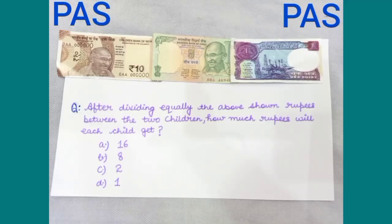Now, the question for pass, after dividing equally, the above shown rupees between the two children, how much rupees will each child get? Students, you can see, there are 16 rupees. When we will divide these 16 rupees between the two children equally, each child will get 8 rupees. So, the right answer for our question is, option B, that is 8.